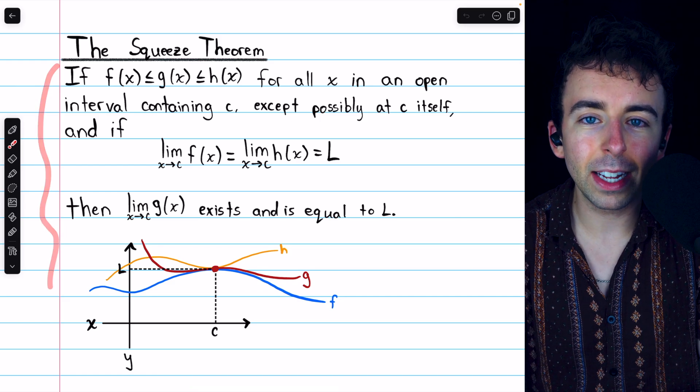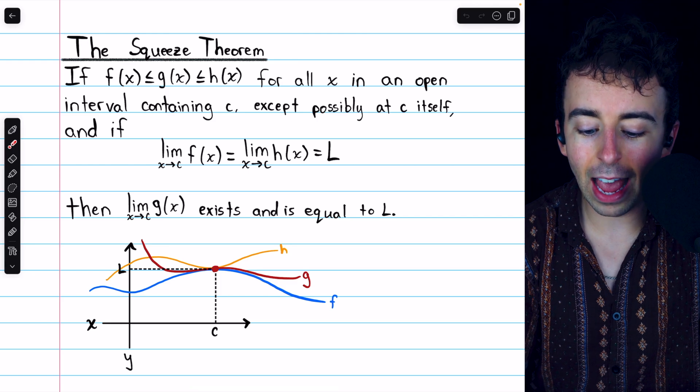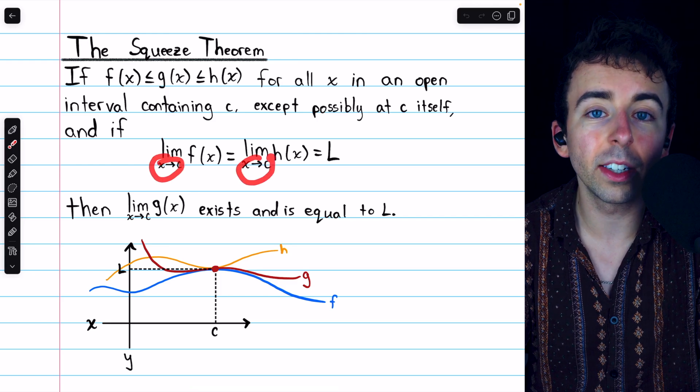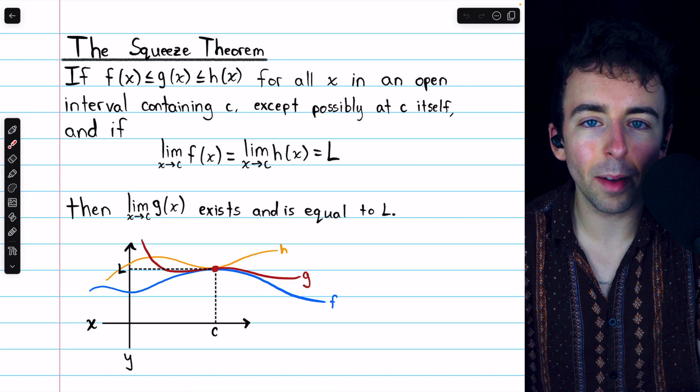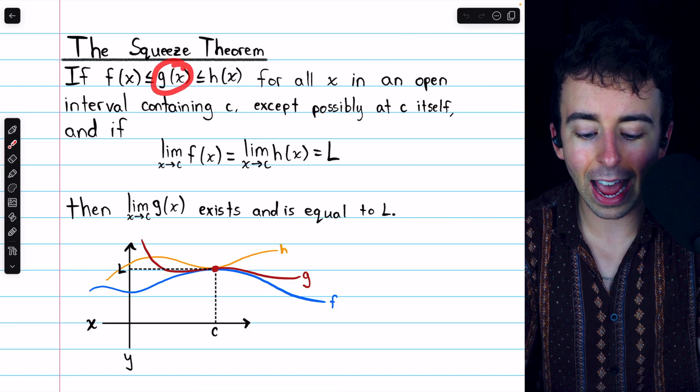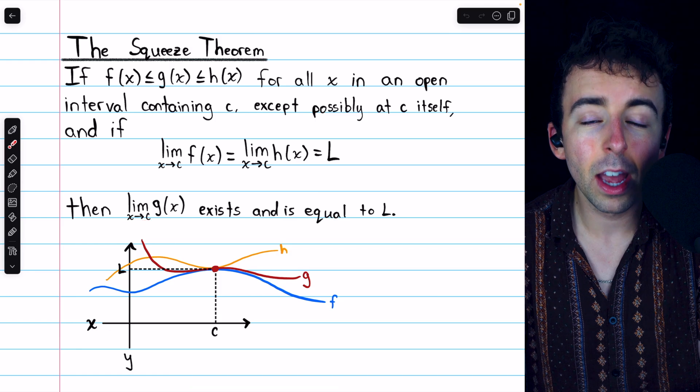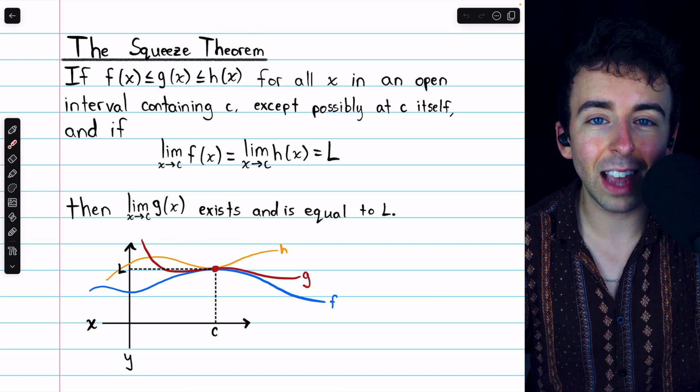Here is statement of the theorem. It's talking about limits as x approaches a point we're going to call c. Specifically, the theorem will let us conclude something about the limit of a function g(x) as x approaches c, provided these conditions are satisfied.